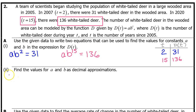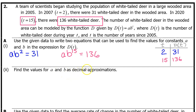Part A2: Find the values for a and b as decimal approximations. I'm going to show you how to do this two ways — first by hand, and then using the regression capabilities of your calculator to find a and b even more quickly.